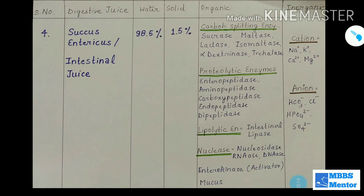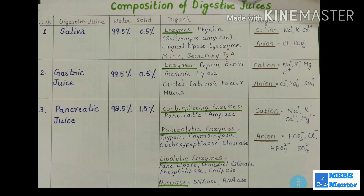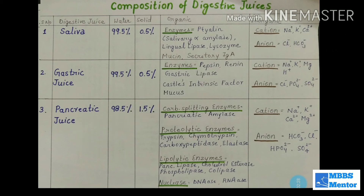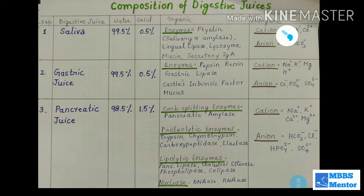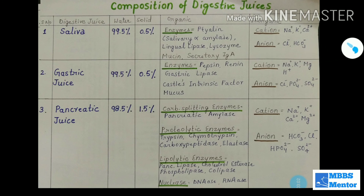Let's do a quick revision. We have studied four digestive juices: saliva, gastric juice, pancreatic juice, and intestinal juice. Bile was not covered in detail here — bile mainly has bile salts, bilirubin, and bile pigments, which will be discussed in the next video. Saliva: 99.5% water, 0.5% solids; enzymes include salivary amylase, lingual lipase, lysozyme, mucin, and secretory immunoglobulins; plus cations and anions.